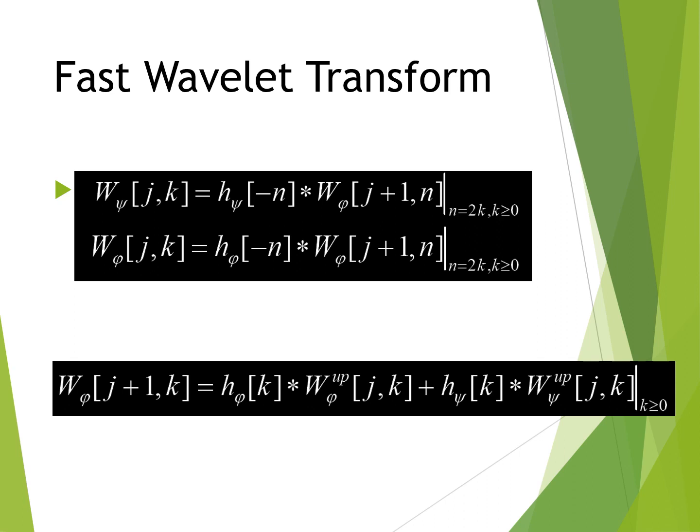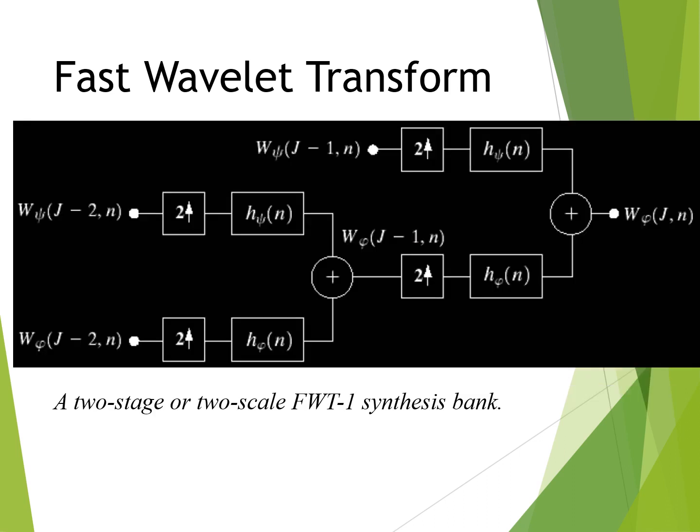Note that the highest scale coefficients are assumed to be the sampled function itself, i.e., W_psi of j, n equals f(n), where j is the highest scale. The up-sampled coefficients are then filtered by convolution with h_phi(n) and h_psi(n) and added to generate higher scale coefficients. In synthesis, a better representation of sequence f(n) with greater detail and regularization is obtained as with the forward FWT. The inverse filter bank can be illustrated as shown above, where a two-scale structure is used for computing the final two-scale FWT.